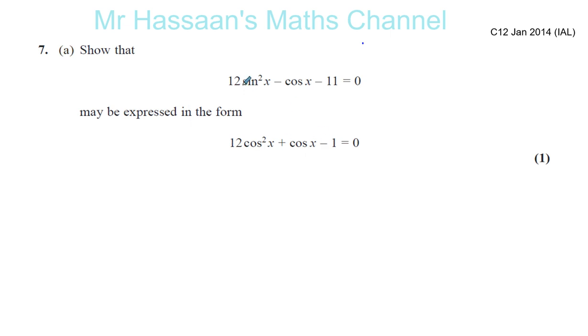Here you've got sine and cosine, and here you've got cosine and cosine. So basically what's happened is this sine squared x has been transformed somehow into cosine squared x.